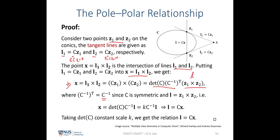We end up with x = det(C) · C^{-1} · l, which equals k · C^{-1} · l, where k is the scalar determinant. Since scale doesn't matter, we can rearrange to get l = C·x, where l is our polar line.